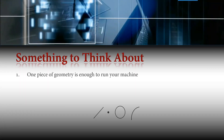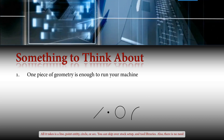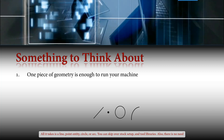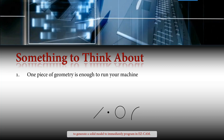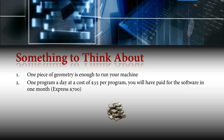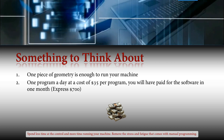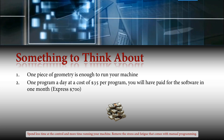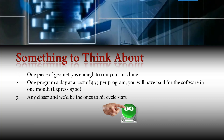Something to think about: one piece of geometry is enough to run your machine. All it takes is a line, point entity, circle, or arc. You can skip over stock setup and tool libraries. There is no need to generate a solid model to immediately program in EasyCam. One program a day at a cost of $35 per program, you will have paid for the software in one month. Spend less time at the control and more time running your machine. Remove the stress and fatigue that comes with manual programming.